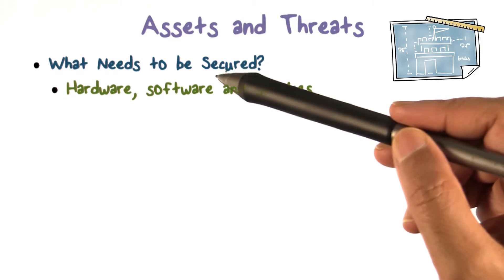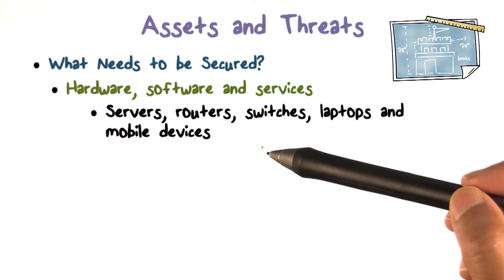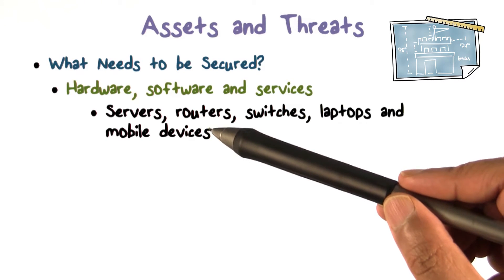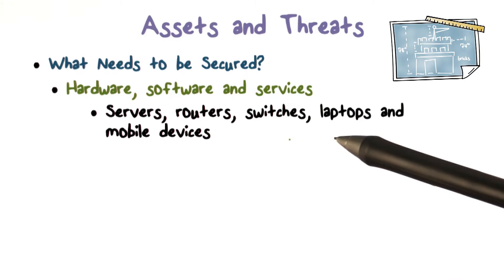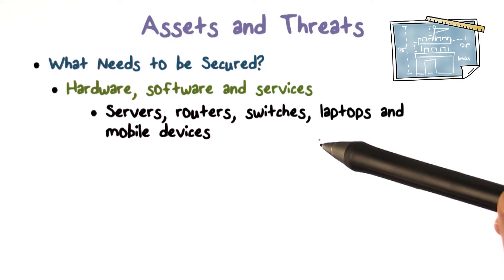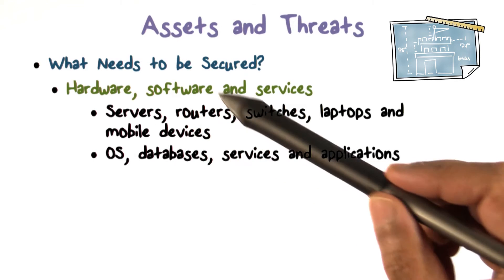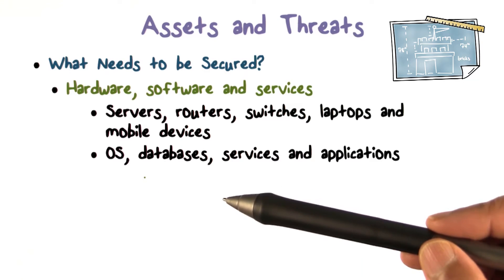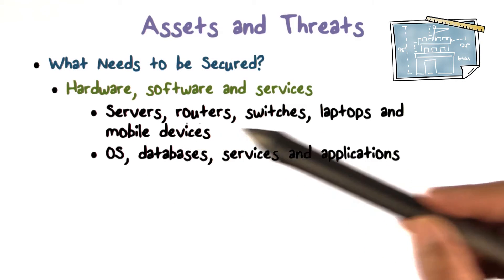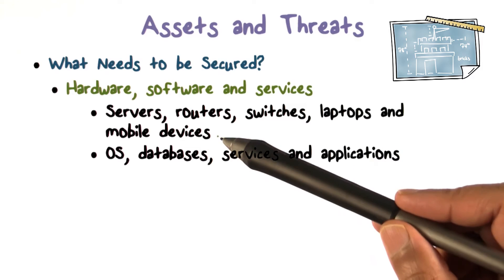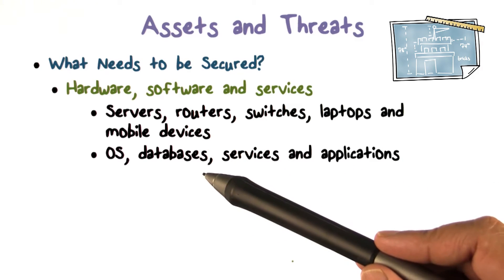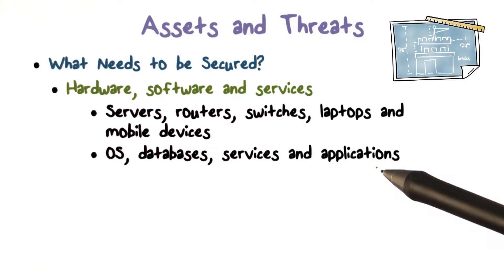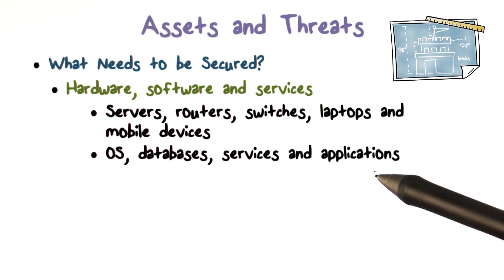We have to concern ourselves about securing them. When you think about cyber security and planning for it, you have to worry about all these assets — the list of what needs to be secured has to include all these. When you talk about the software, we're running operating systems on servers, laptops, or mobile devices, the databases that store large amounts of data, and the services and applications we actually have on the devices.